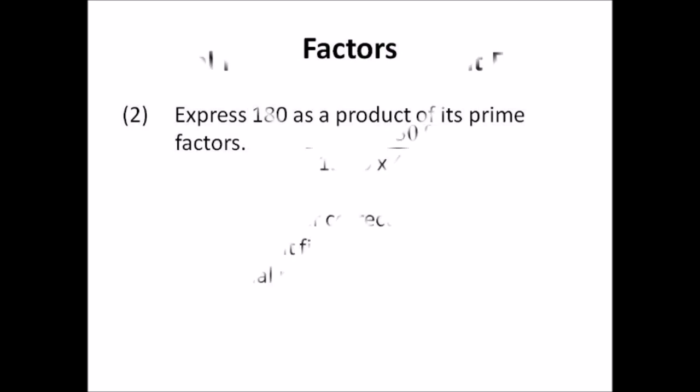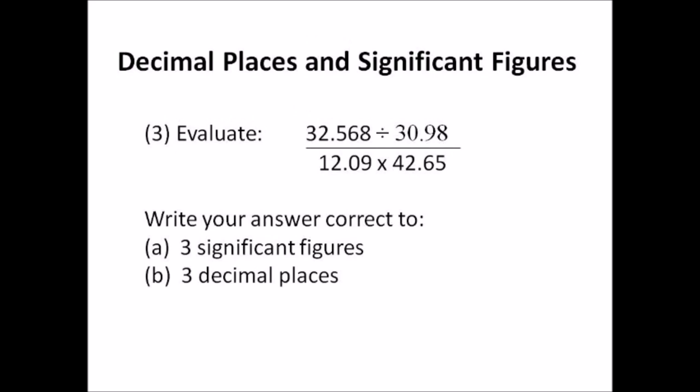Number three: decimals, significant figures. Evaluate 32.568 divided by 30.98, all of that over 12.09 times 42.65. Write your answer correct to three significant figures, and then write that same answer correct to three decimal places. You need to know the difference between significant figures and decimal places. Use your calculator and work it out quickly.